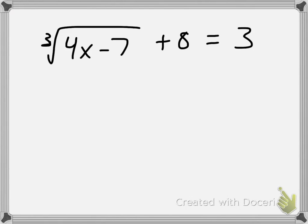So I want to isolate my cube root of 4x minus 7. And to do that, I'm going to move my 8. Since it's addition over here, I will subtract it from each side.